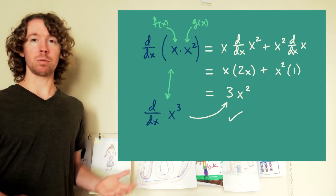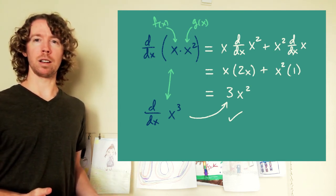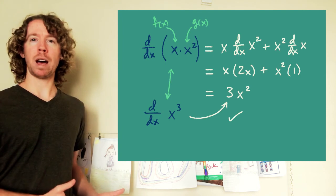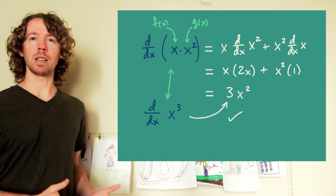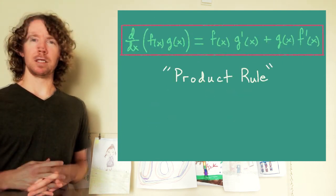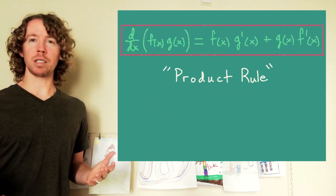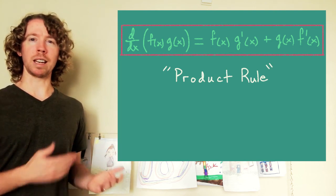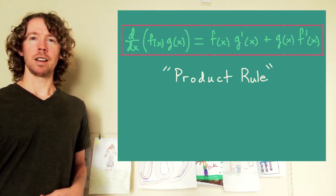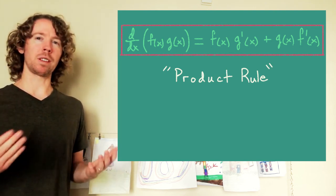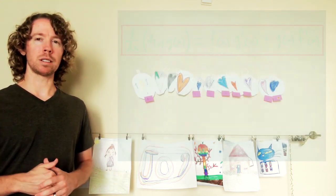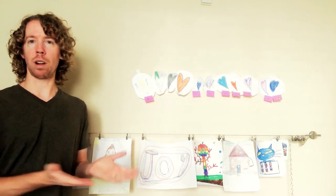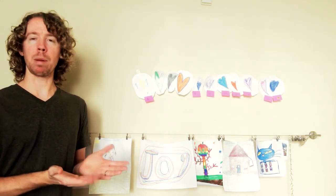The math we did to derive it was correct, so this pattern works every time. This is called the product rule. It's especially useful for functions that appear as products, like e to the x times sine of x. Now we're confident we can take the derivative of that without a long process — we just follow this quick pattern.